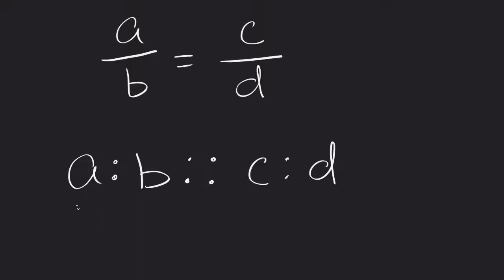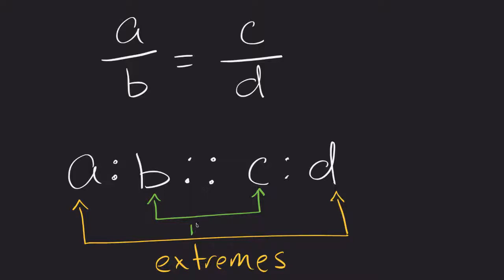Well, if you think about where these are located, those two are like on the very far extremes of this problem. This is the far outside, this is the far outside. If you think about these two, they're in the middle. Middle, if you're talking about math, is like the average or the means.